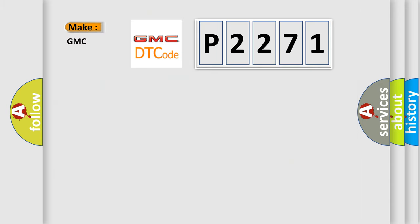So, what does the diagnostic trouble code P2271 interpret specifically for GMC car manufacturers? The basic definition is HECU fault.